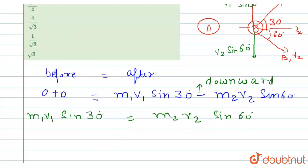Now we find the ratio. V1 divided by V2 equals M2 sin 60 degrees divided by M1 sin 30 degrees.